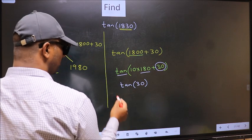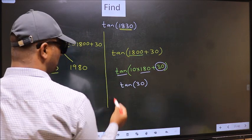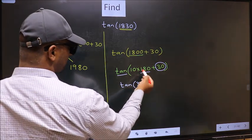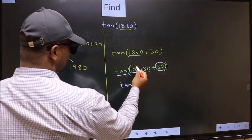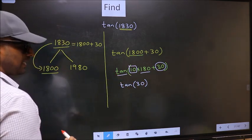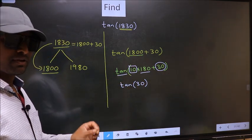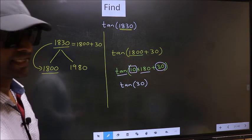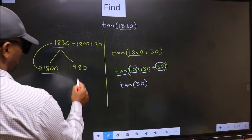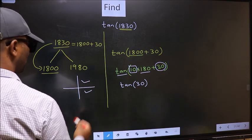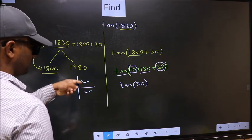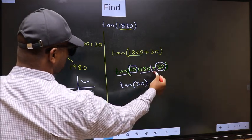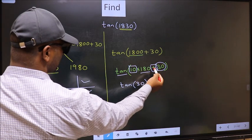Now the question is, will we get here plus or minus? To answer that, we should look at the number before 180. That is 10. And 10 is even. And all the even multiples of 180 lie in either the first or the fourth quadrant. So now to select the quadrant, we should look at this symbol. Here we have plus.